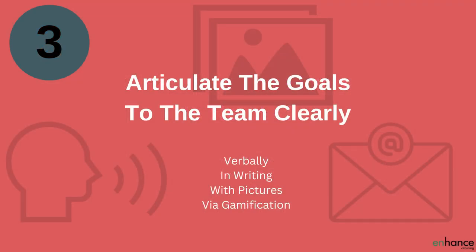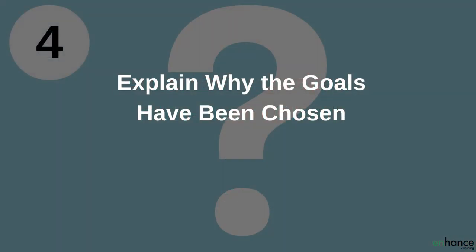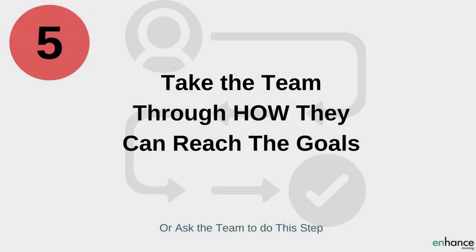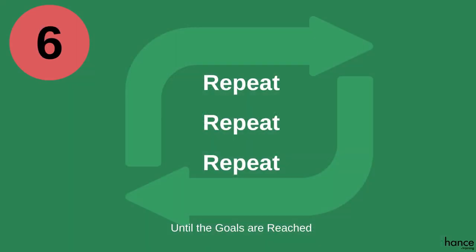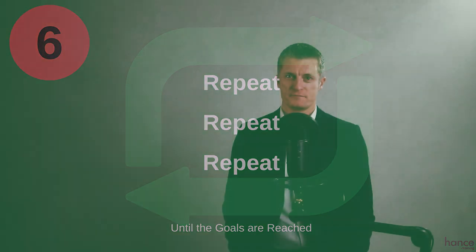Third, articulate the goals to the team clearly — verbally, in writing, in pictures, via gamification, etc. Fourth, explain why the goals have been chosen. Fifth, take the team through how they can help reach the goals, or ask the team to do this step. And sixth, repeat these messages again and again until the goals have been reached. If the expectations are not important enough for you to repeat and constantly be focused on until the goals are reached, how are they going to be important to your team?